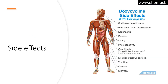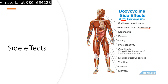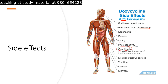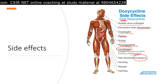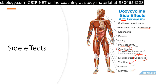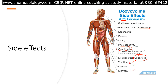The side effects of doxycycline when taken orally include sudden acne outbreak, permanent tooth discoloration with prolonged use, esophagitis, rashes, itching, and photosensitivity. Candidiasis — fungal infection of the skin and mucous membranes — can also result. It can kill gastrointestinal bacteria, leading to abdominal distress including vomiting, nausea, diarrhea, abdominal cramps, and spasms. These are the different side effects of oral doxycycline.